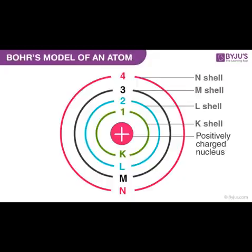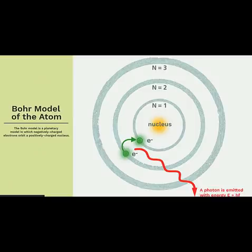Bohr further explained the different energy levels: each energy level per electron has a fixed amount of energy. He said that when atoms absorb energy from the environment, the electrons of the atoms move into a higher energy orbit — this is referred to as excited electrons. And when atoms release energy as electromagnetic radiation, the electrons return back to their original energy orbit.